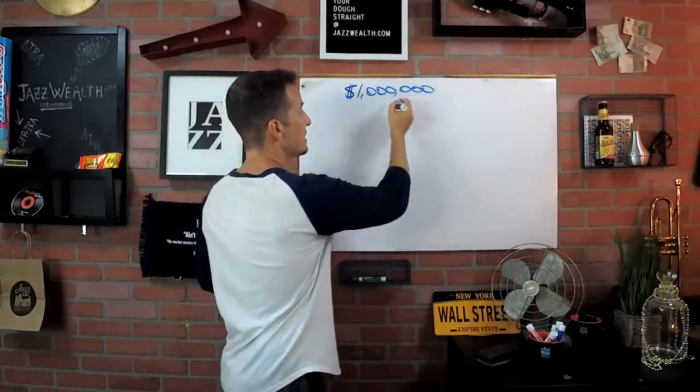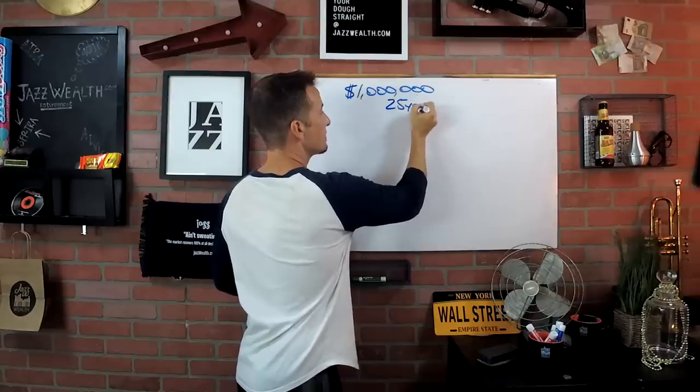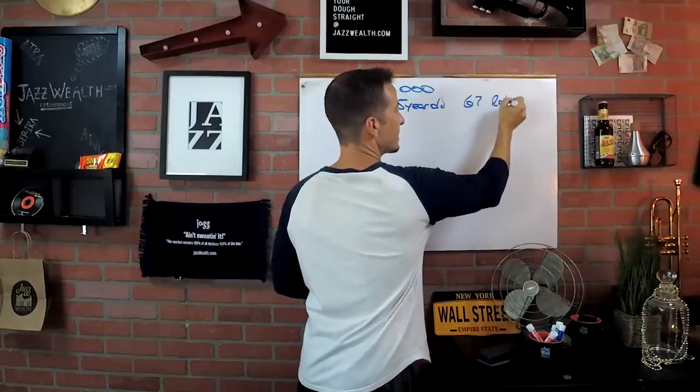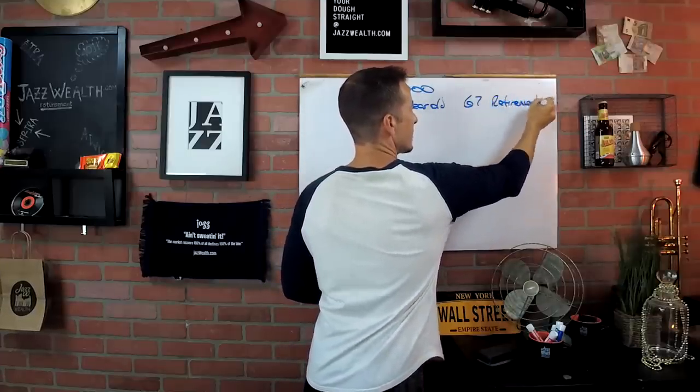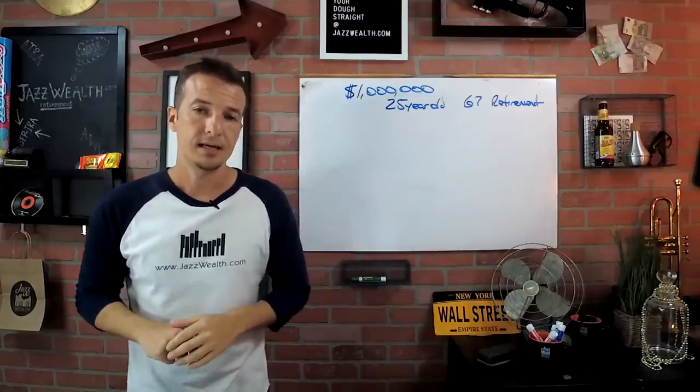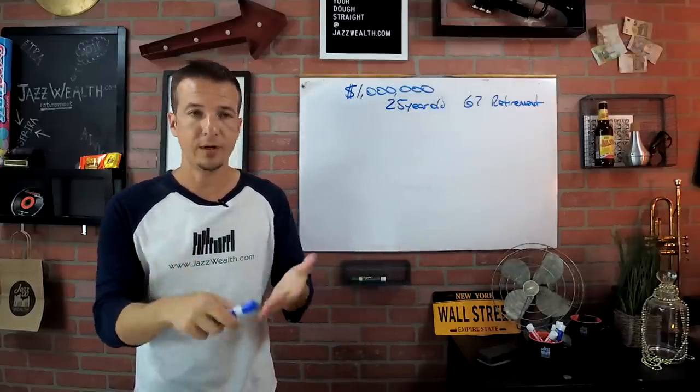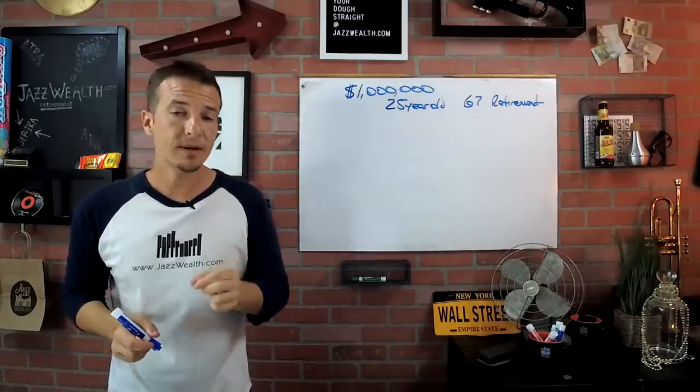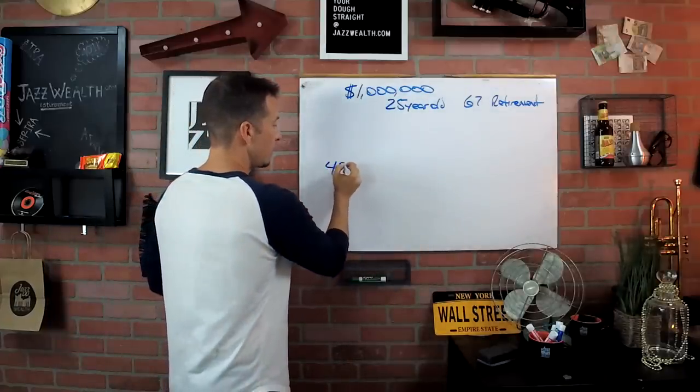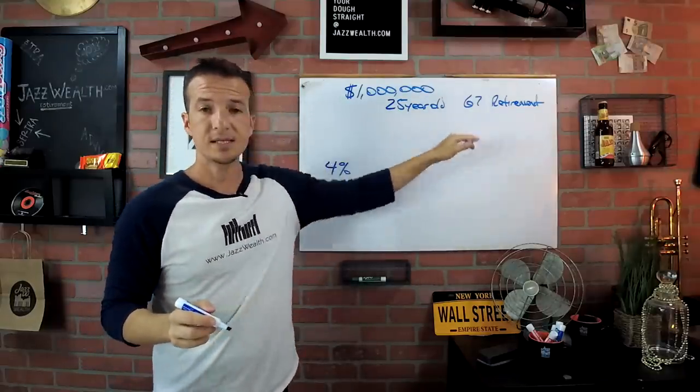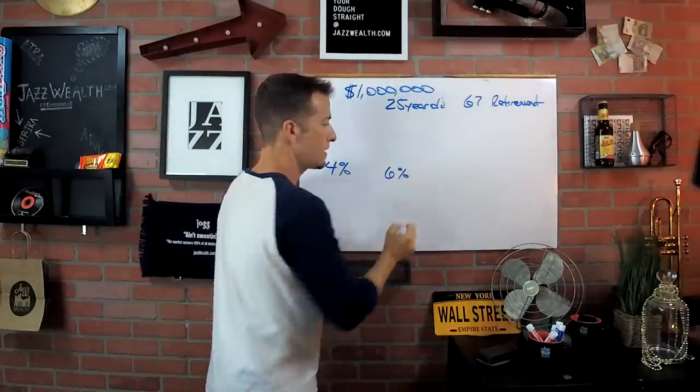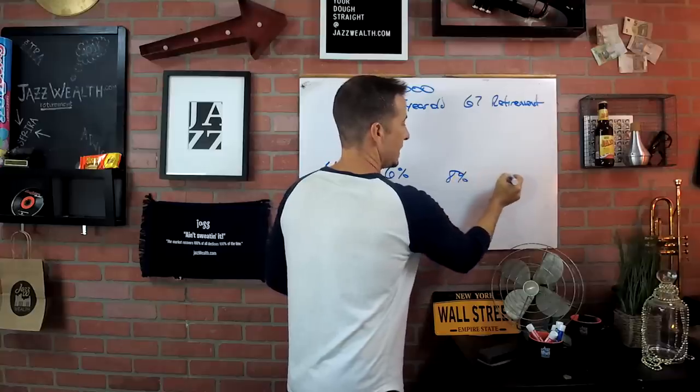What we're going to do is say we have a 25-year-old, and that person is going to retire at 67 years of age. If you are investing for a set return, how much do you need to invest on a daily, weekly, or monthly basis? This is where it becomes important because if you're invested too conservatively, you're going to get in some trouble. We're going to say, what happens if over all this time from 25 to 67, you are only invested to get a 4% return? Then we're going to do 6%, 8%, and 10%.